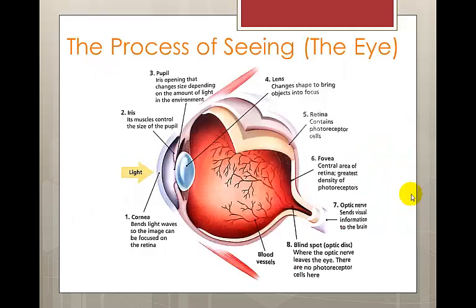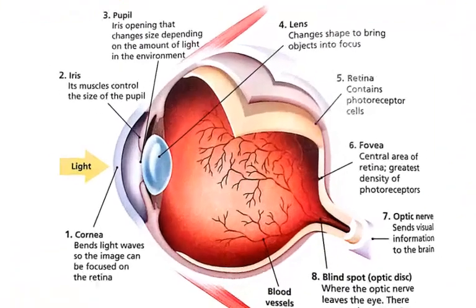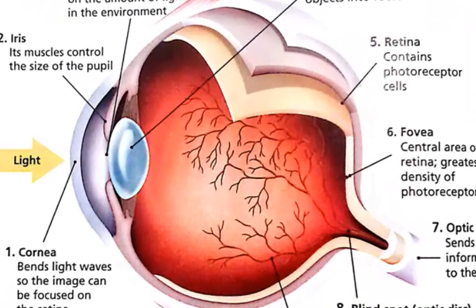Once through the lens, light passes through a large open space filled with a clear jelly-like fluid called the vitreous humor. This fluid also nourishes the eye and gives it its shape. So in here, this would be the vitreous humor. This slide here shows you the process of seeing step by step.